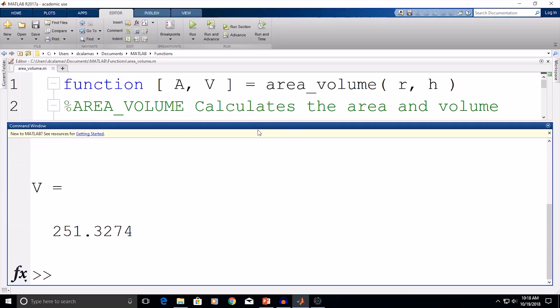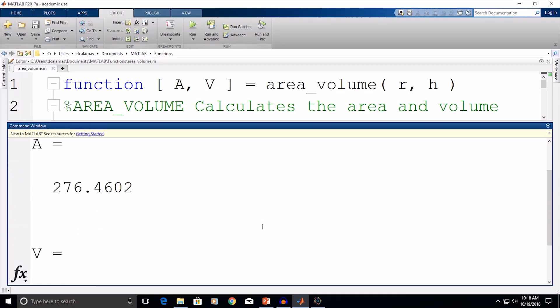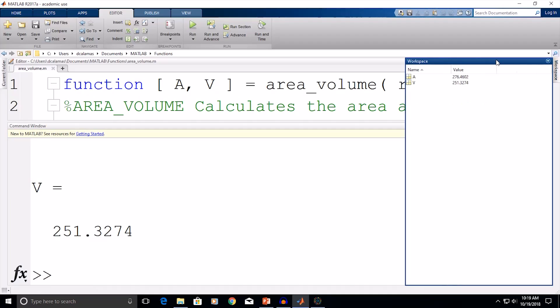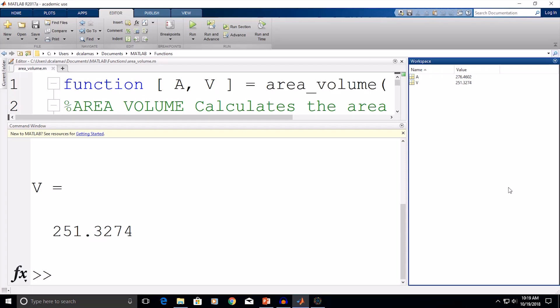And now you'll see that we have two answers, one for area and one for volume. And if I go to the workspace, and I'll restore it, we see that, great, we have stored these two variables successfully, and they are not just stored locally inside the function now as that answer variable.